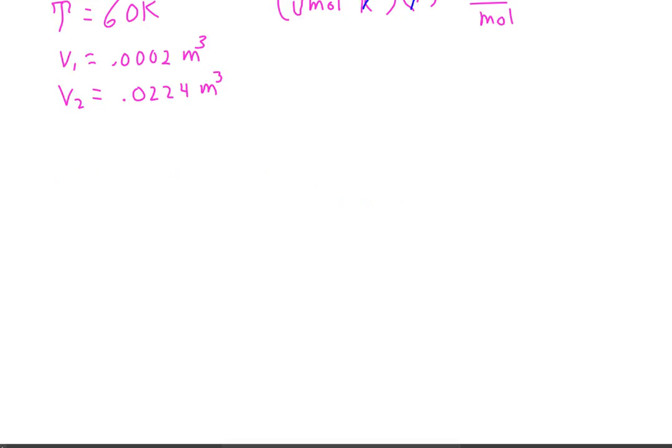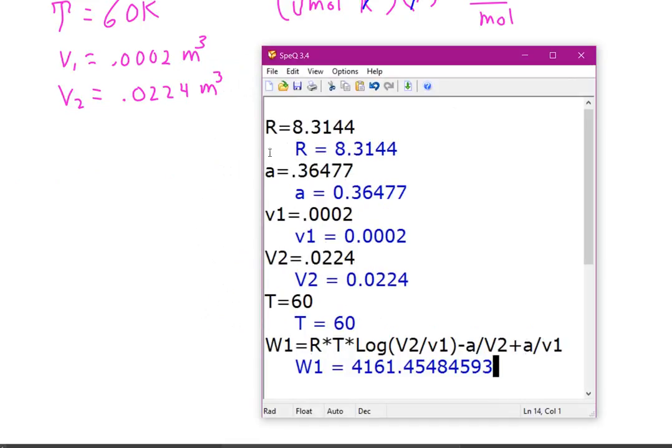So, now, I'll bring up the calculator. Let's see. And we have defined R, A. We've defined V1 and V2 in temperature. We've defined our work. It's going to be R times T times the log of V2 over V1 minus A over V2 plus A over V1. And that's going to be 4,161. And since we're totally in SI units, that number is in joules.